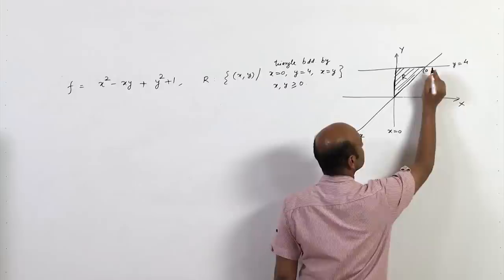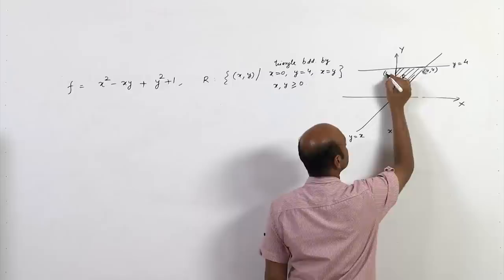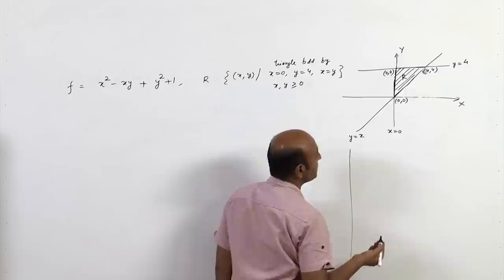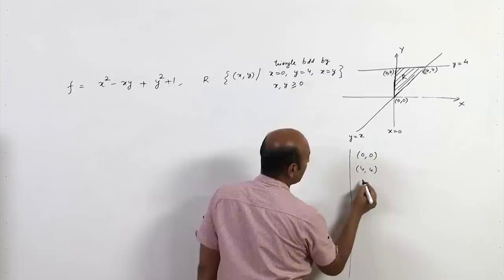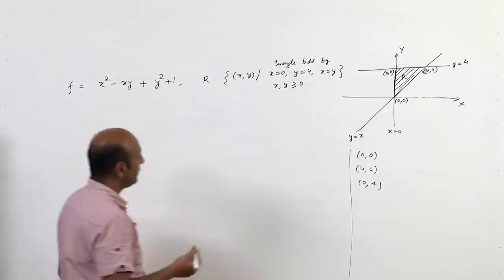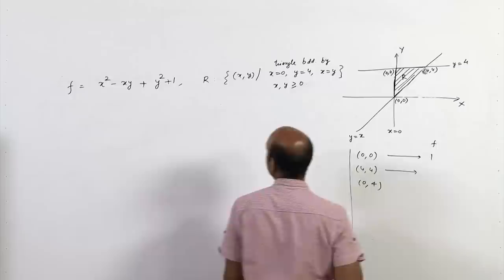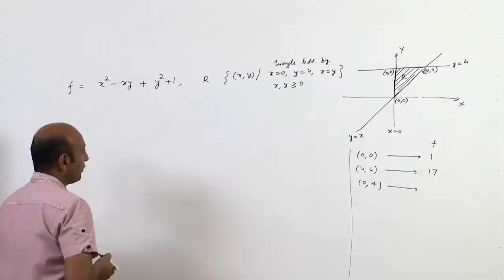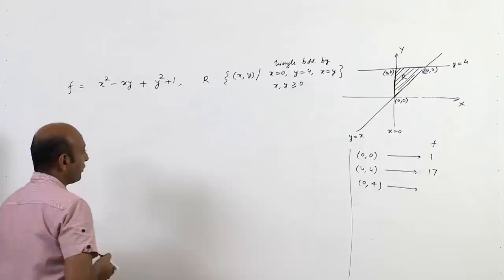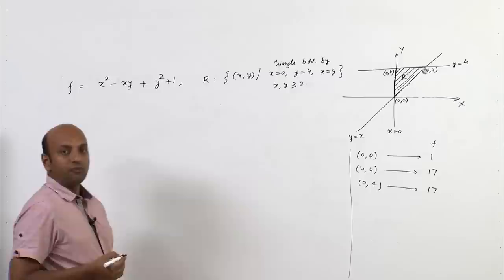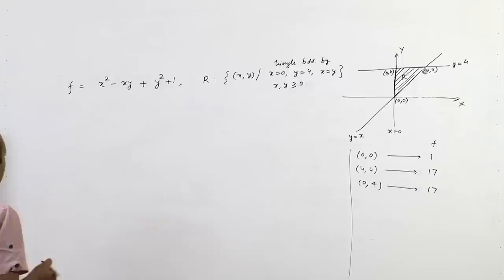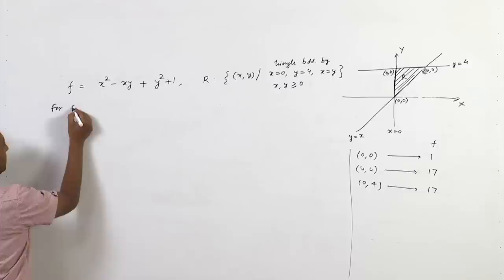The vertices are (0,0), (4,4), and (0,4). At (0,0): f = 1. At (4,4): f = 16 - 16 + 1 = 1... actually f = 16 - 16 + 1 = 17 — wait, let me note the computed values: f(0,0) = 1, f(4,4) = 16 - 16 + 1 = 17 (as stated), and f(0,4) = 0 - 0 + 1 = 17 when substituting x=0, y=4.